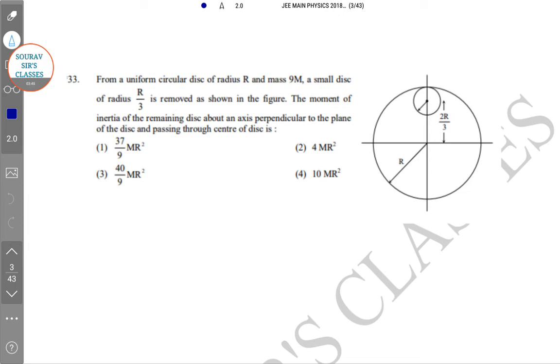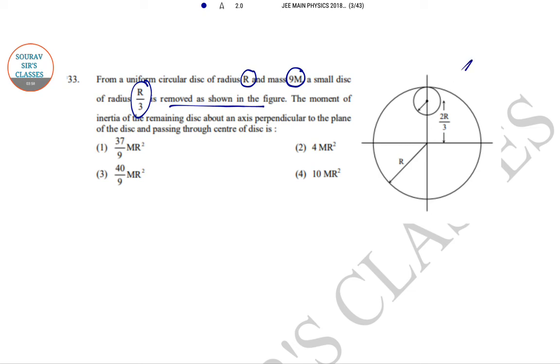Next is this one. From a uniform circular disk of radius R and mass 9M, a small disk of radius R by 3 is removed as in this picture. The moment of inertia of the remaining disk about the axis perpendicular to the plane of the disk and passing through the center of the disk. So here this portion is 2R by 3, and mass per gravity is M. So πR² equals 9M, so πR² by 9 equals M.